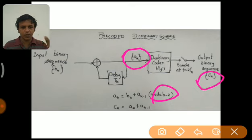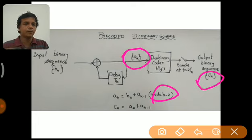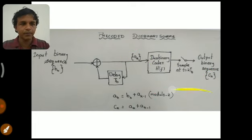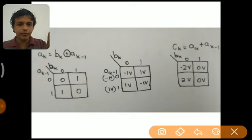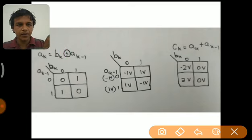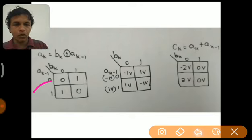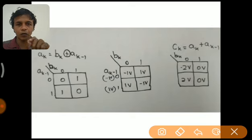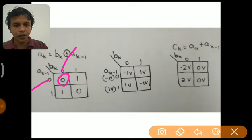Now let us see how BK is represented in the form of amplitude levels using this pre-coded duobinary scheme. AK is the modulo-2 addition between BK and AK minus 1. AK minus 1 can be either 0 or 1, and BK can be either 0 or 1. For the XOR operation: when both inputs are the same the output is 0, and when both inputs are different the output is 1.